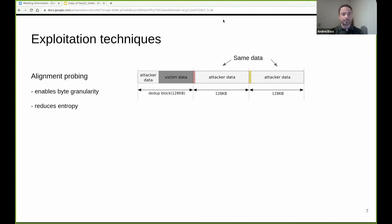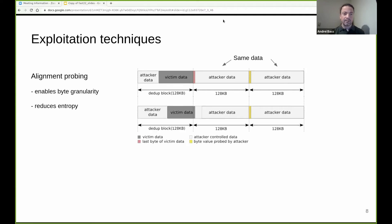The next technique is alignment probing, which is used by the attacker to probe each byte of the victim's data independently. The attacker writes data in a block, filling it partially. Then the victim writes the rest of the block, spilling the last byte into the next block. The attacker fills the block and uses the next block to test for the byte value. The attacker then varies the alignment in the first block and repeats the sequence to discover the next byte, and so on, until the whole secret data of the victim is known. This enables the attacker to work at byte granularity and reduce the entropy of the secret.